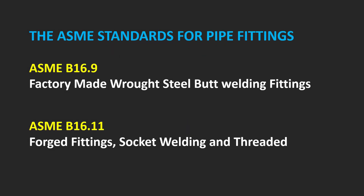ASME Standards for Pipe Fittings: ASME B16.9 covers factory-made wrought steel butt-welding fittings. ASME B16.11 covers forged fittings — socket welding and threaded.